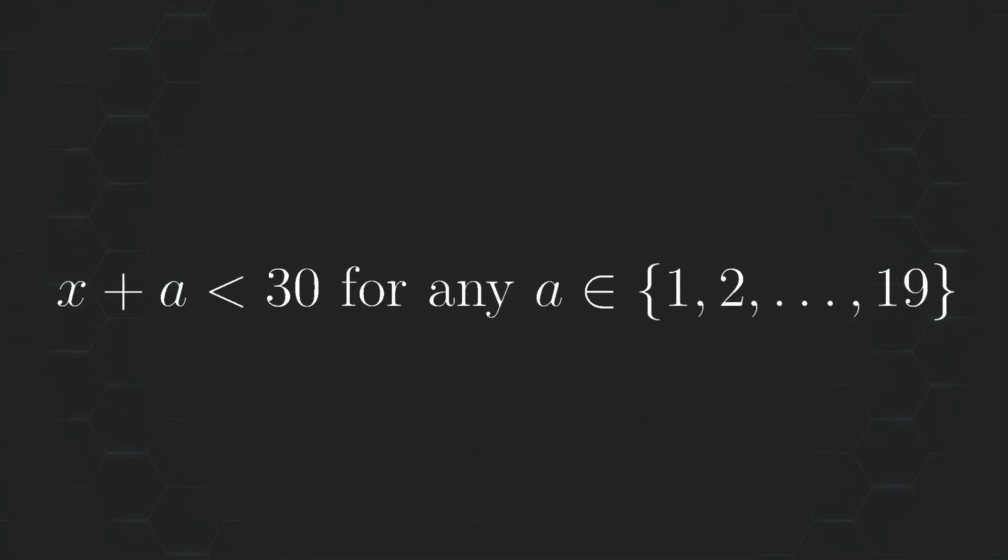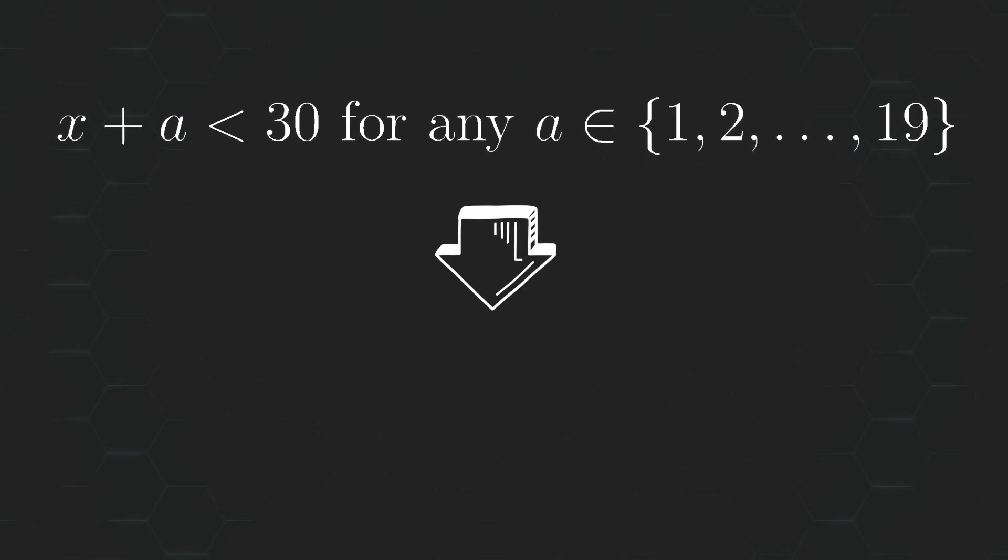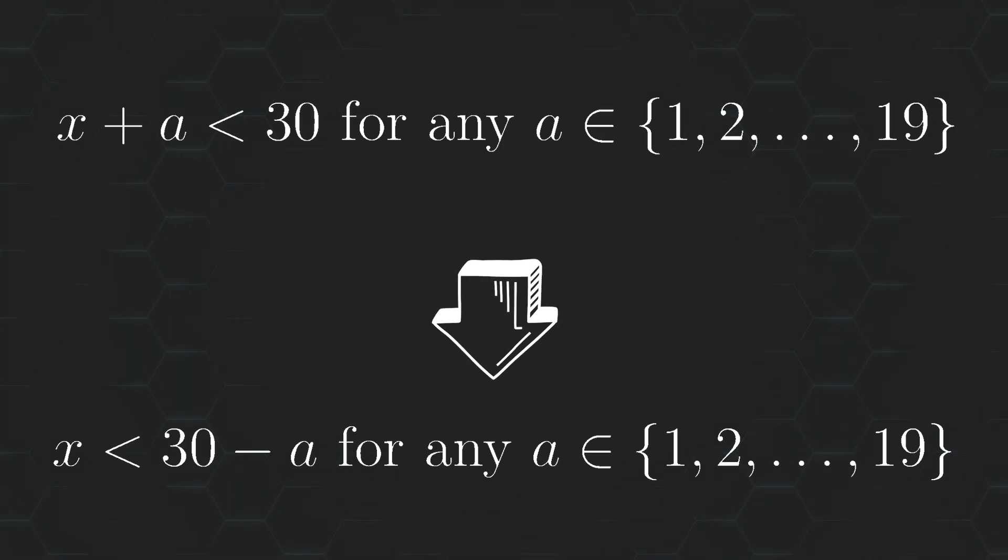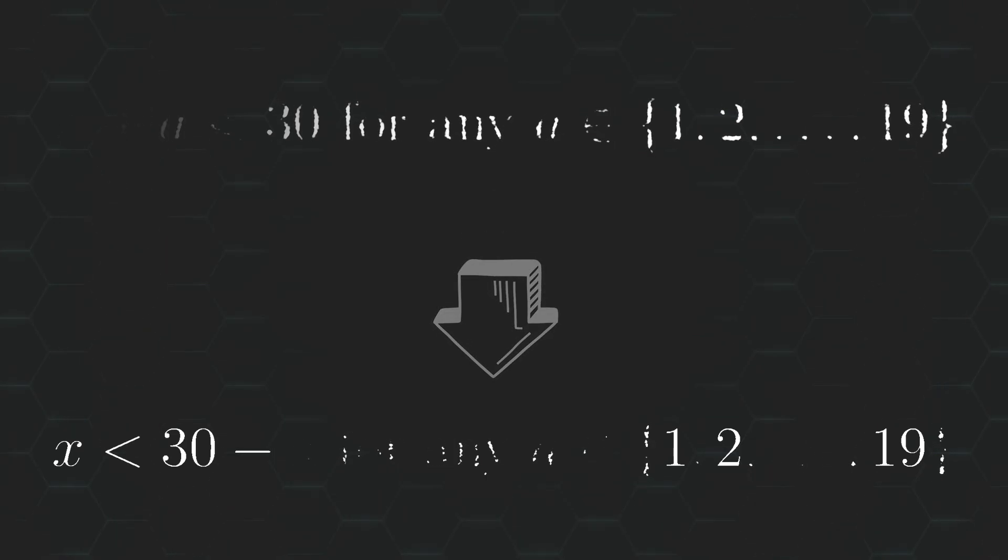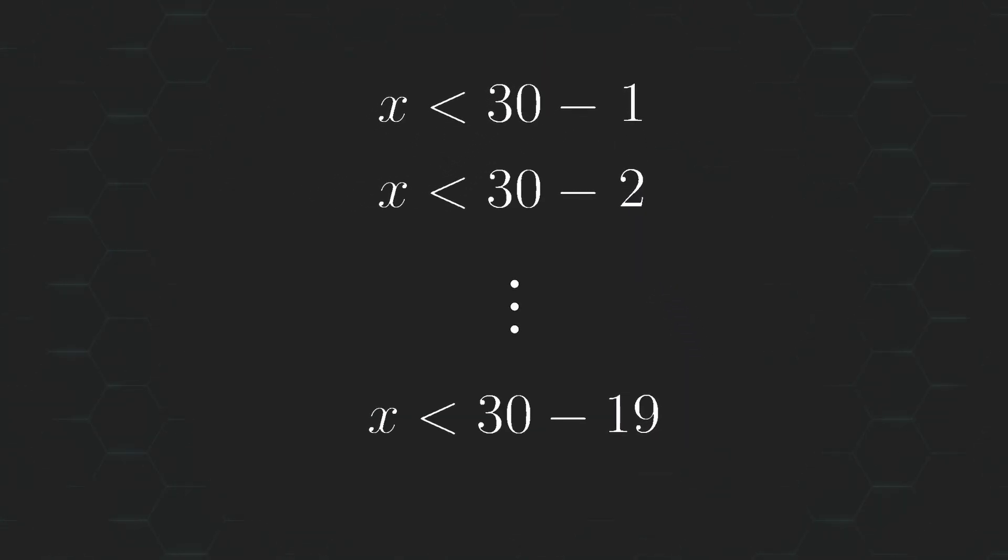The first condition tells us that the central number added to any other number from our set must be less than 30. In other words, the central number must be less than 30 minus any other number from our set. So, it must be less than 30 minus 1, 30 minus 2, all the way down to 30 minus 19. And this just ends up simplifying to tell us that the central number must be less than 11.